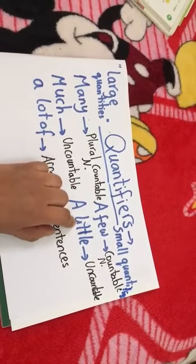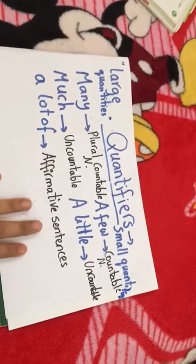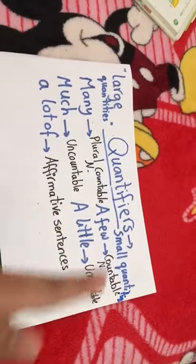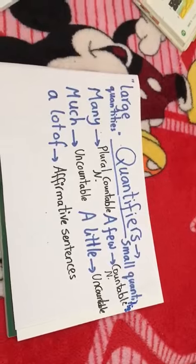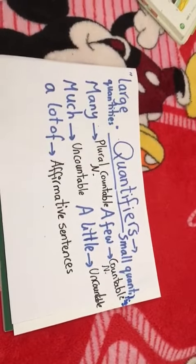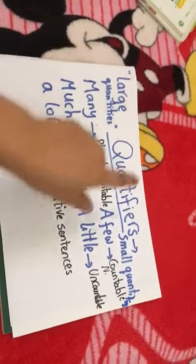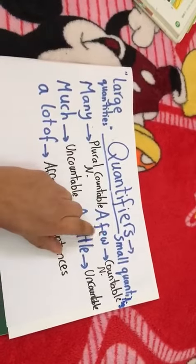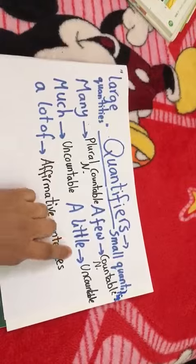Okay Junior Four, let's look at 'a few' and 'a little'. These two words mean that I don't have many or much, but I have enough. For example, instead of saying I don't have many friends, I can say I have a few friends. So the rule is: use 'a few' with countable nouns.